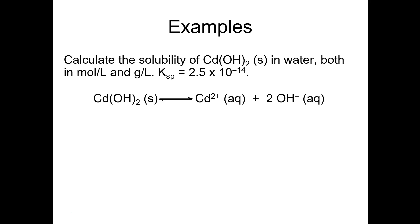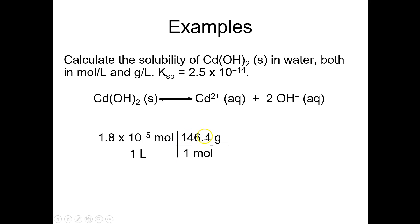We can calculate cadmium hydroxide solubility in grams per liter. The molar solubility is 1.8 × 10⁻⁵ mol/L. Multiplying by the molar mass of cadmium hydroxide — 146.4 g/mol — we get 2.6 × 10⁻³ g/L, so about 2.5 milligrams of this compound will dissolve in a liter of water.